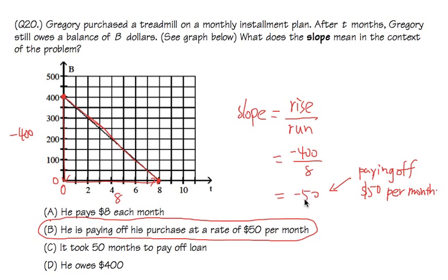This is 50. But you see, the question doesn't have negative because they used the word 'paying off.' That's why I just say he's paying off at the rate of $50 per month. That's it.